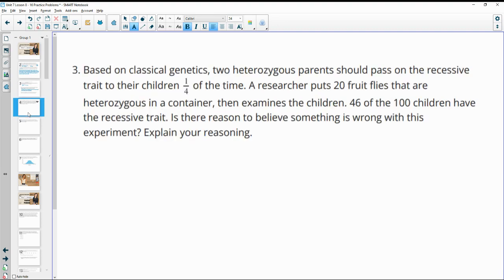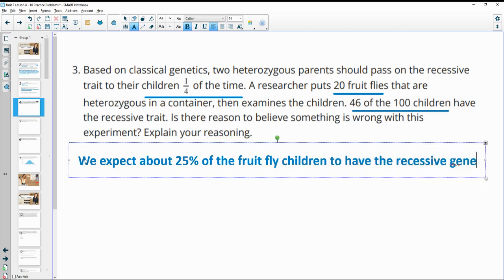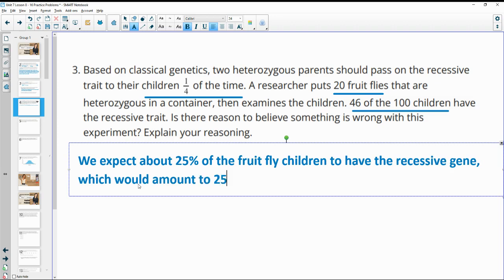Based on classical genetics, two heterozygous parents should pass on a recessive trait to their children one-fourth of the time. So this is our expected. A researcher puts 20 fruit flies that are heterozygous in a container, then examines the children. We expect about 25% of the fruit fly children to have the recessive gene. That's one-fourth of the time. So 25% of fruit flies to have the recessive gene, which would amount to 25 out of 100.